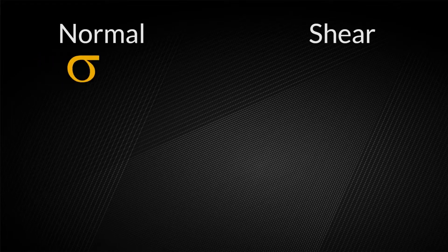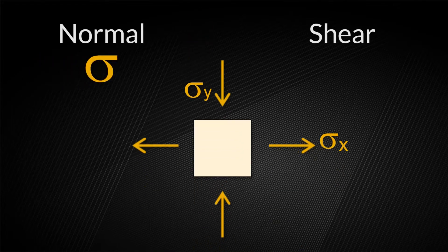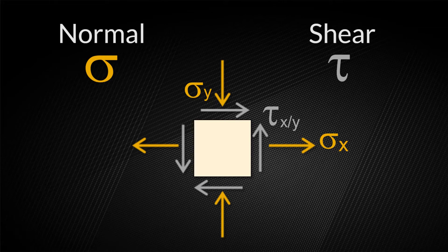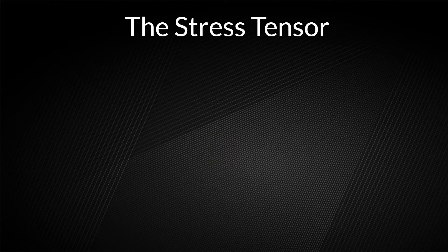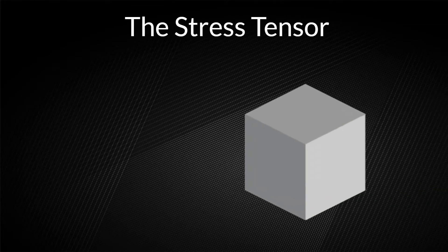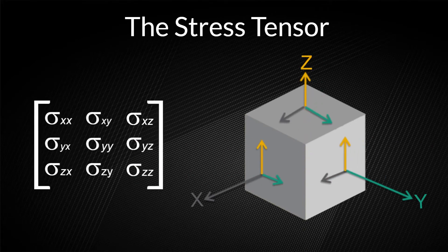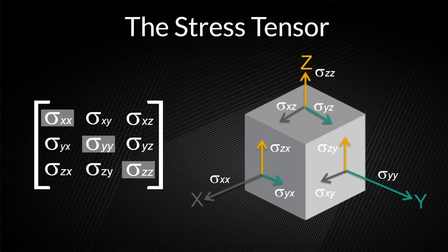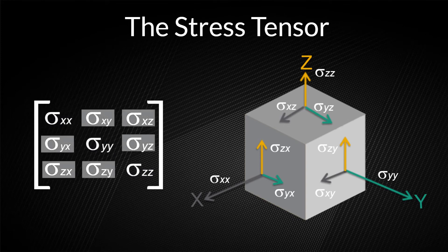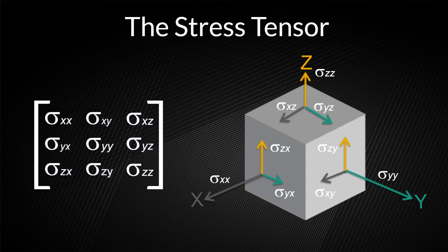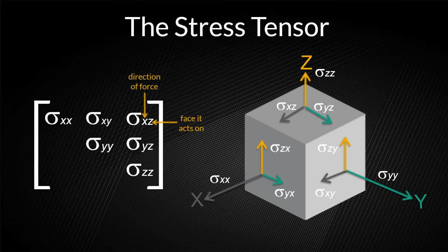Normal stress is designated with the Greek letter sigma and it acts perpendicular to a plane or face. Shear stress is designated with the Greek letter tau and it acts parallel to a plane. At any point inside a material, we can visualize a small cube. It is possible to have three stresses acting normal to each face, and also shear stresses acting across a face in two directions, resulting in nine stress values — three normal and six shear. For a static object, pairs of shear stresses must be equal, resulting in only six independent stresses. The subscripts indicate the direction of the force and the face it acts on.